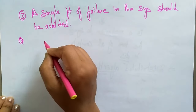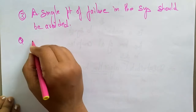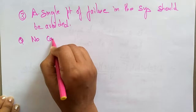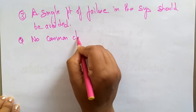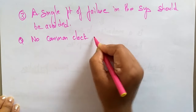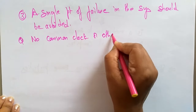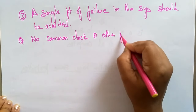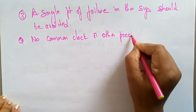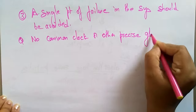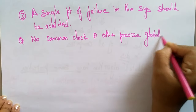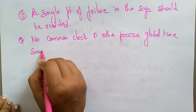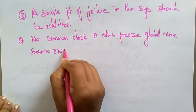One more property is that no common clock or other precious global time source exists. These are the different properties of distributed algorithms used to maintain data synchronization.